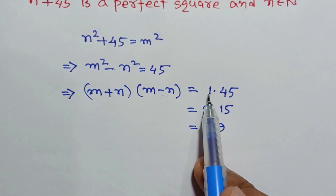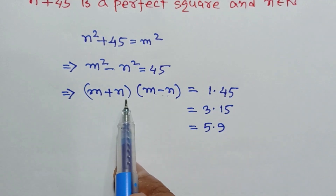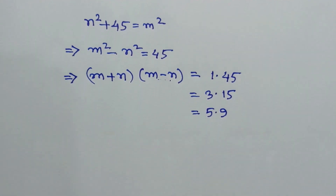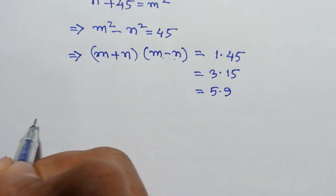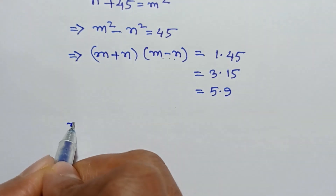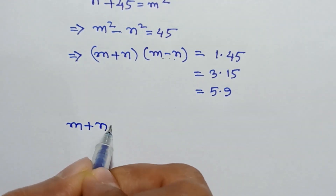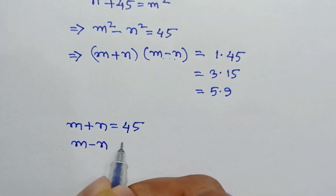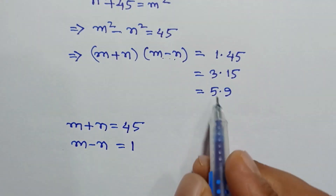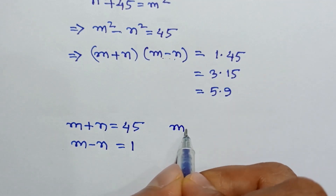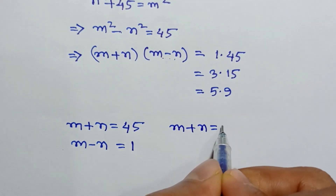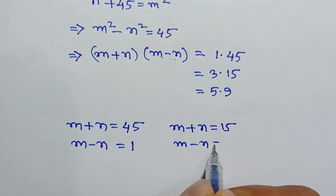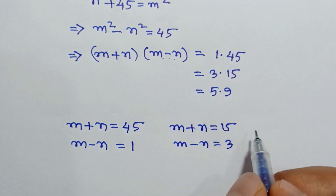...comparing the factor pairs: from 1 times 45, m plus n is equal to 45 and m minus n is equal to 1. From 3 times 15, m plus n is equal to 15 and m minus n is equal to 3.